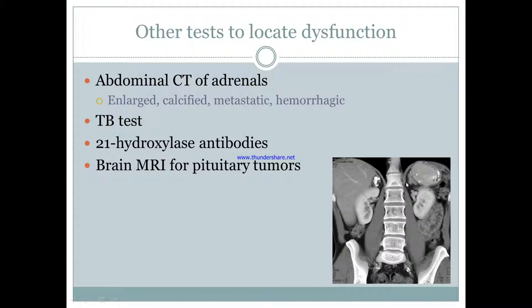After establishing the diagnosis, you can do further tests. If you're thinking primary, get an abdominal CT of the adrenals to look for enlargement, inflammation, calcification, tumors, or hemorrhage. Since in the developing world it's often due to TB, do a TB test. And since it can be autoimmune, check antibodies against 21-hydroxylase. If it's secondary, suspect a pituitary cause and get a brain MRI, potentially looking for a prolactinoma.